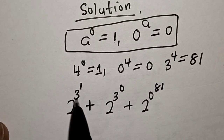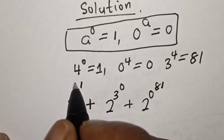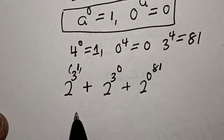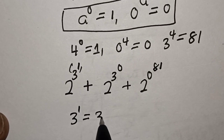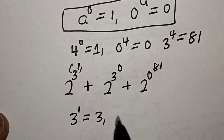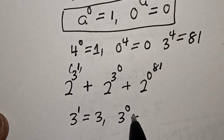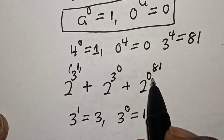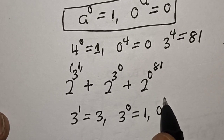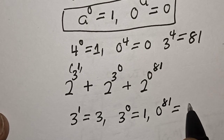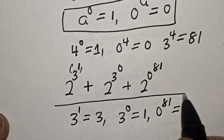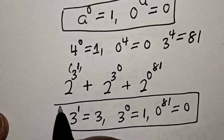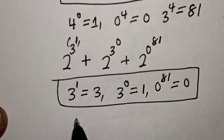Now we simplify again. 3 raised to power 1 is equal to 3, then 3 raised to power 0 is equal to 1, and 0 raised to power 81 is equal to 0. So let's replace these values.